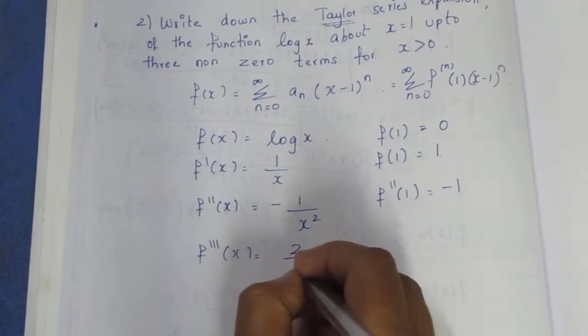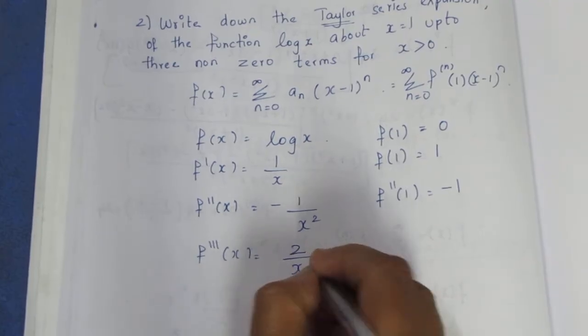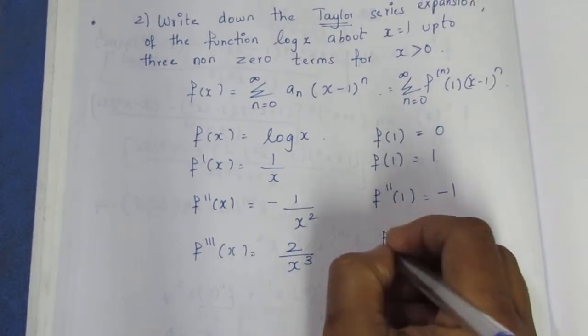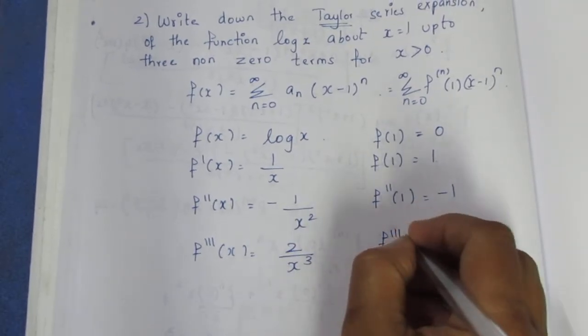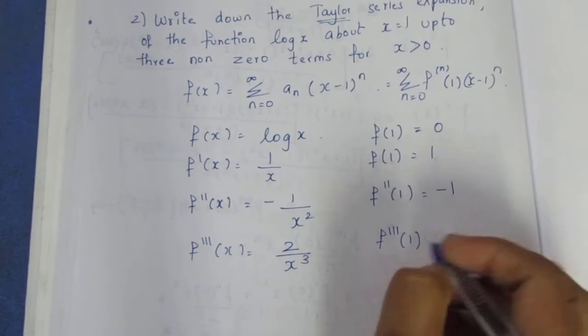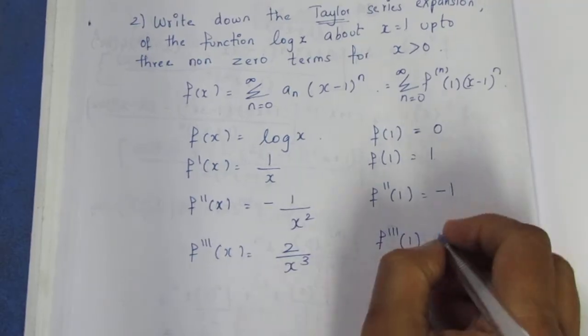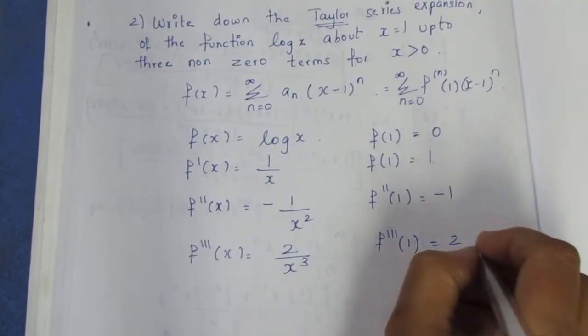Differentiating 1 by x gives minus 1 by x squared, and the third derivative gives 2 by x cubed. So f double dash of 1 equals minus 1.